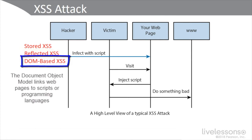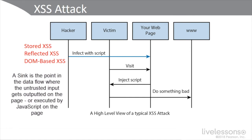Type 0 is referred to as DOM-based XSS. This is where the entire corrupted data flow from source to sink takes place in the browser — for example, the source of the data is in the DOM, the sink is in the DOM, and the data flow never actually leaves the browser.